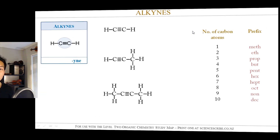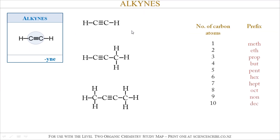To name an alkyne, we're going to have to consult our table. We always look for the longest chain which contains the triple bond. In these first three examples, the first one only has two carbon atoms, so that corresponds to 'eth'. The second one has a longest chain of three carbon atoms, so that's 'prop', and the last one has a longest chain of four carbon atoms, so it's 'but'.